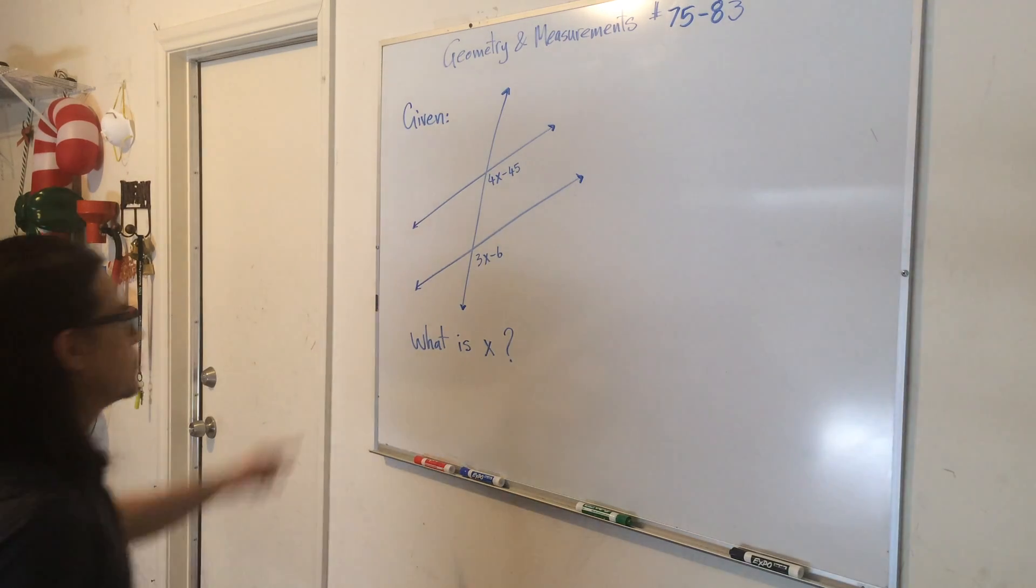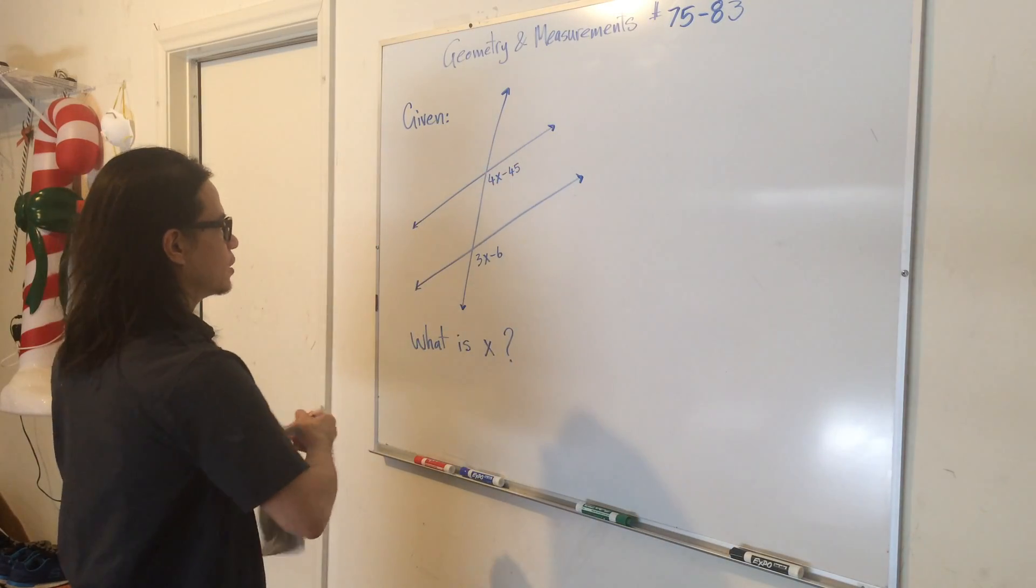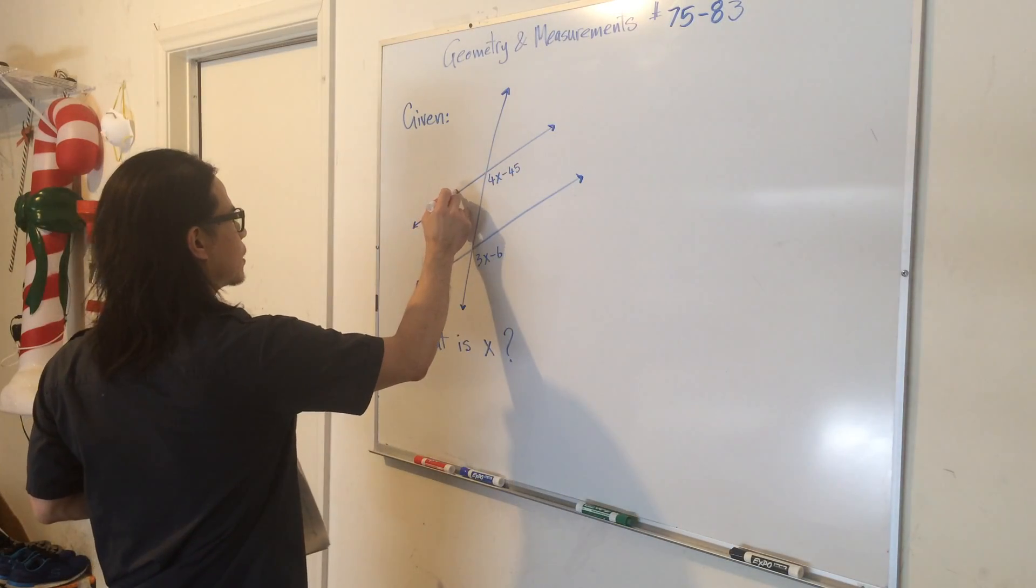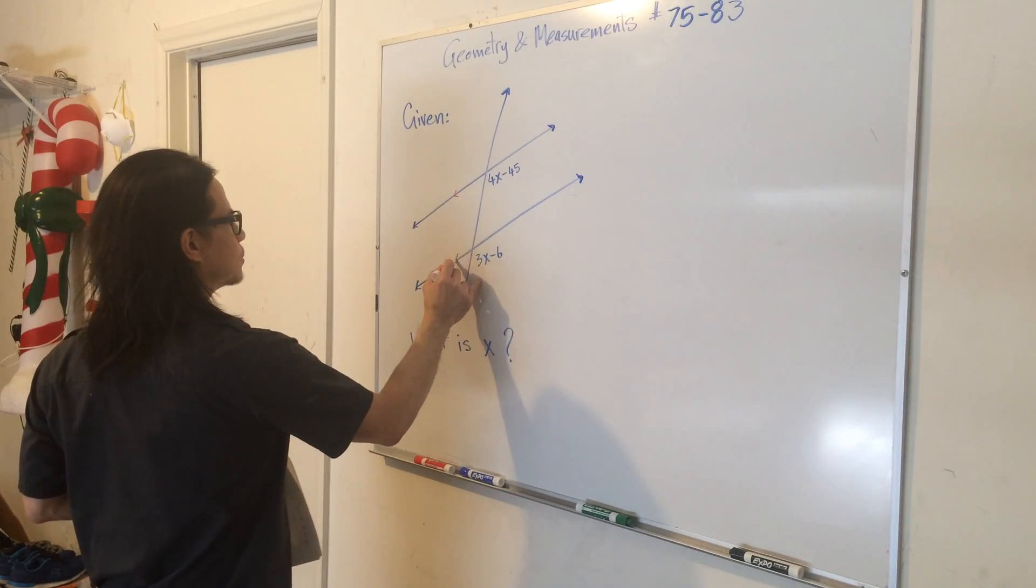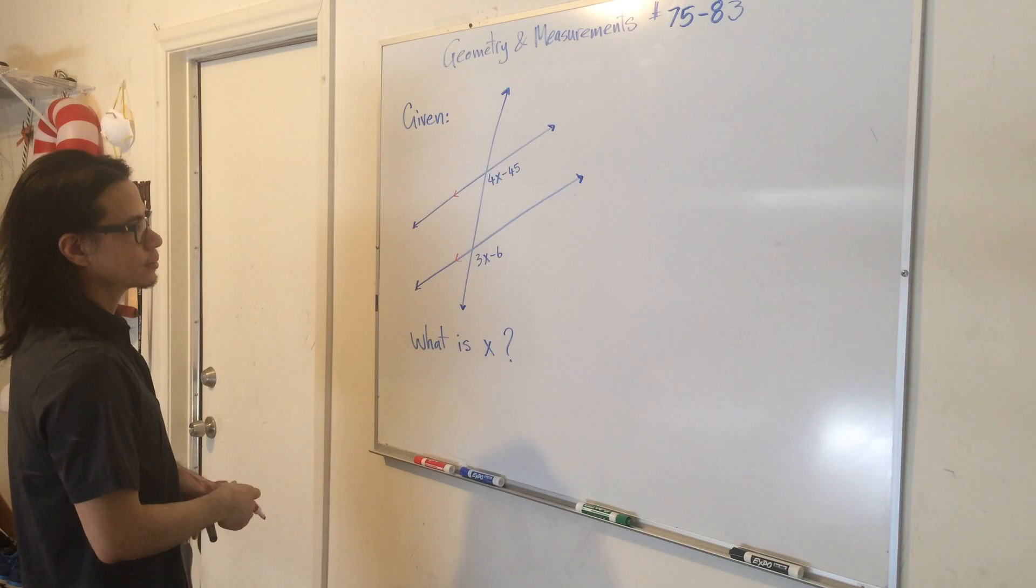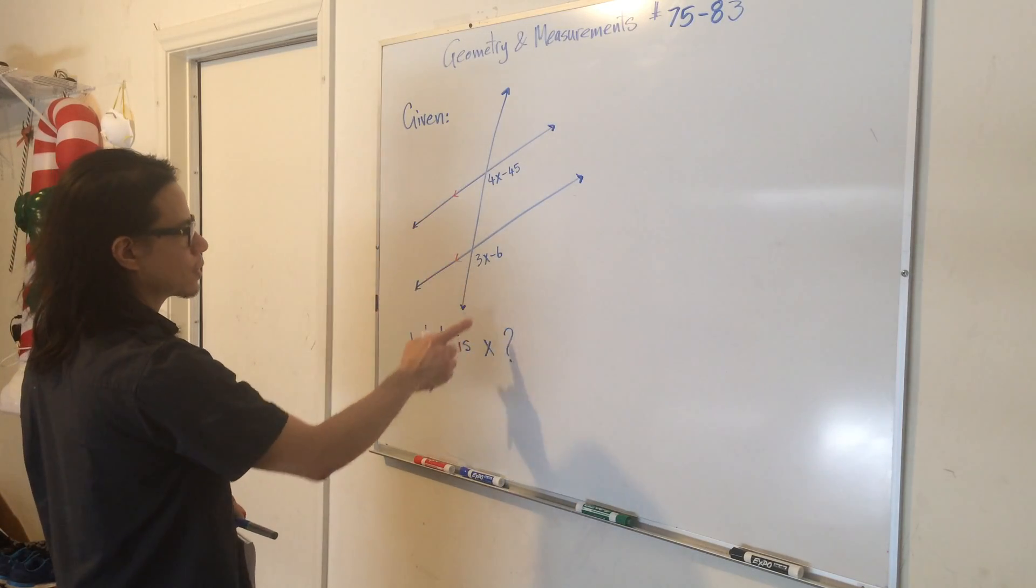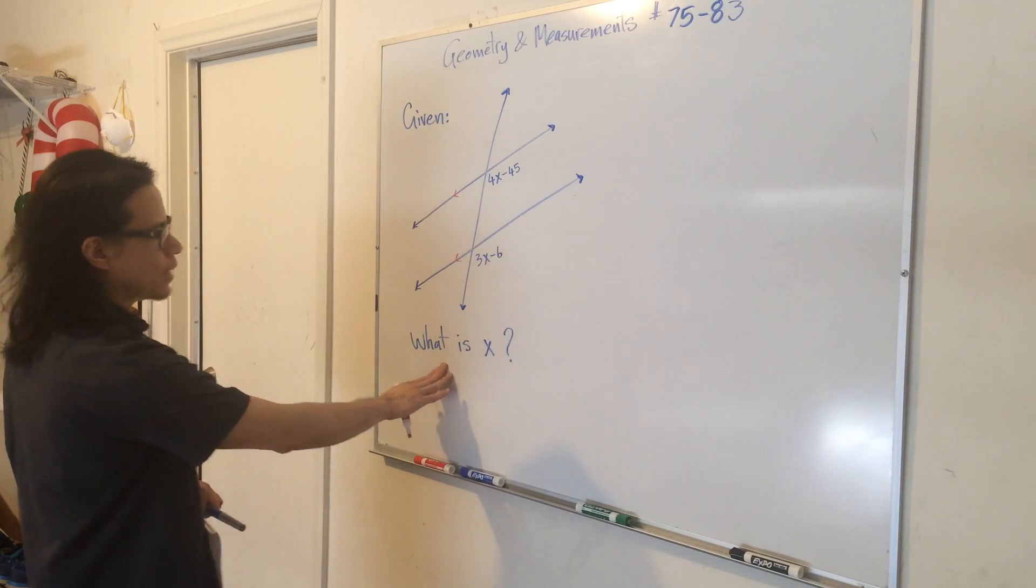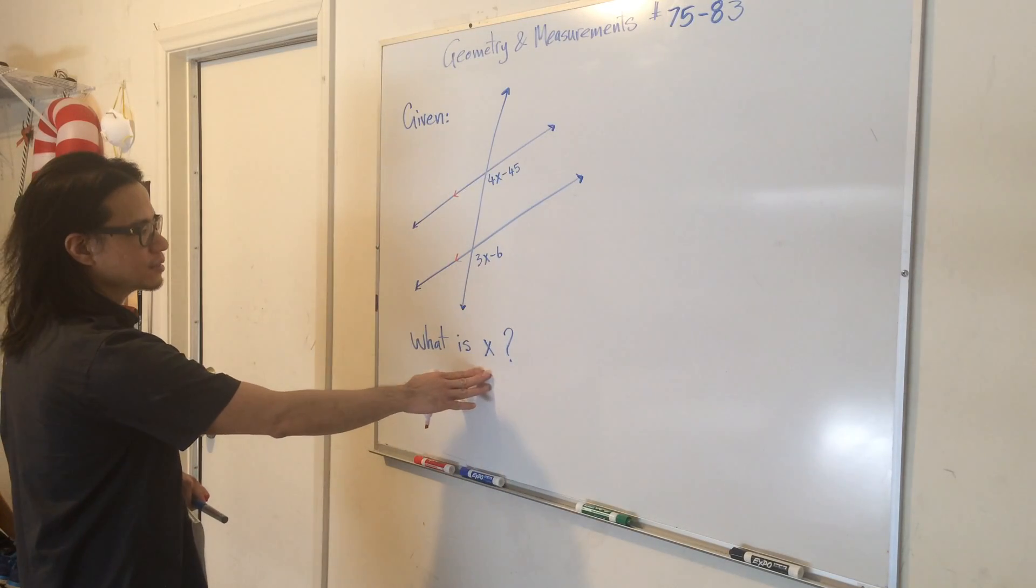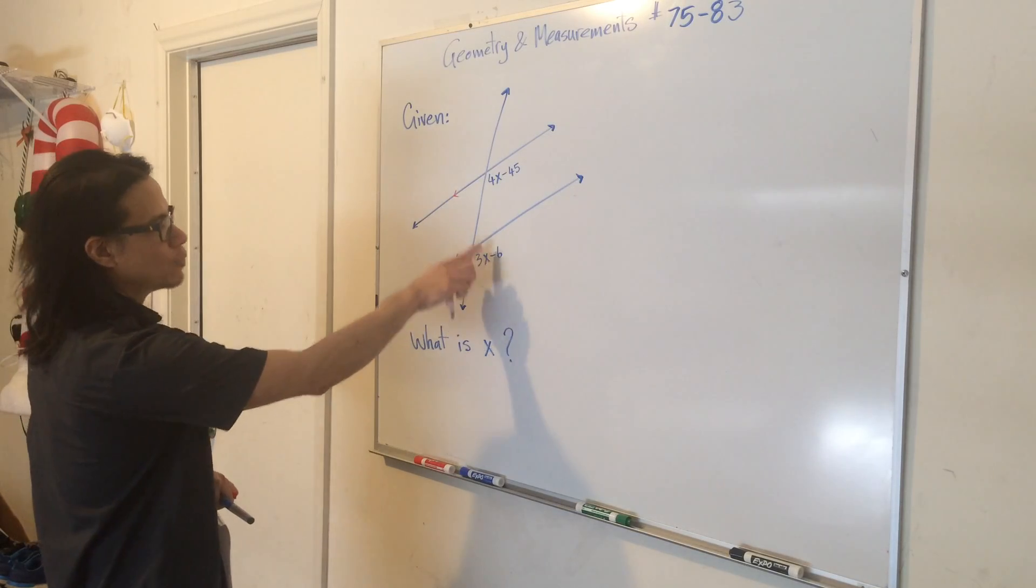Here we're given two parallel lines cut by a transversal, so this line is parallel to this line and then this line cuts through both of those. Given that these two are parallel, we can find out what x is, which is what the question is asking for.